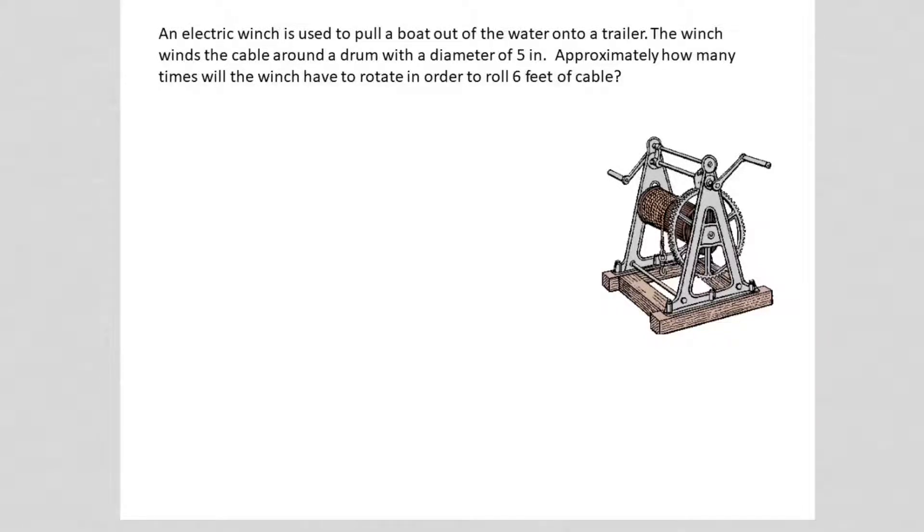An electric winch is used to pull a boat out of the water onto a trailer. The winch winds the cable around a drum with a diameter of 5 inches. Approximately, how many times will the winch have to rotate in order to roll 6 feet of cable?